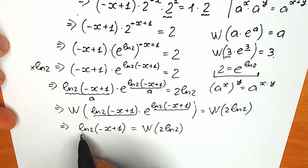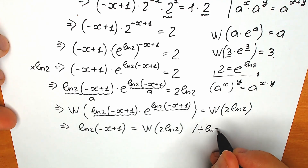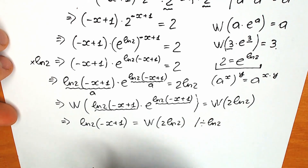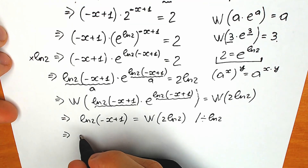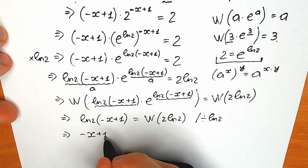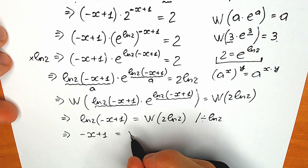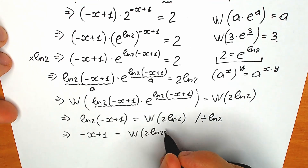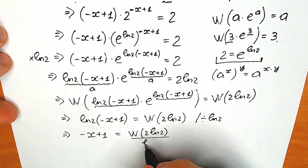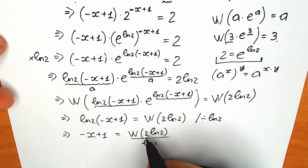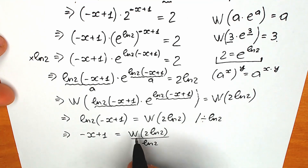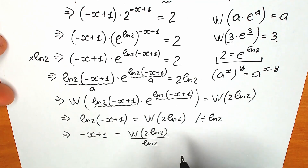Now to find x, let's divide both sides by ln2. We don't have ln2 on the left side anymore — we have only the parenthesis: minus x plus 1 equals Lambert W(2 · ln2) divided by ln2. Note that we can't cancel the ln2 inside Lambert W with the one in the denominator, because the ln2 inside is part of the expression within the function.